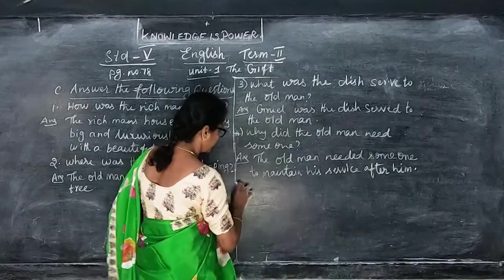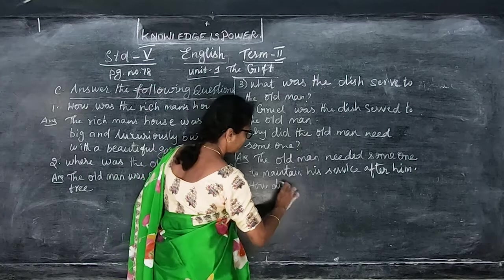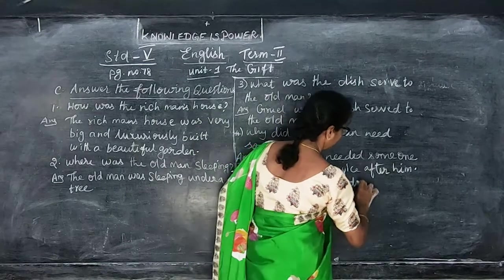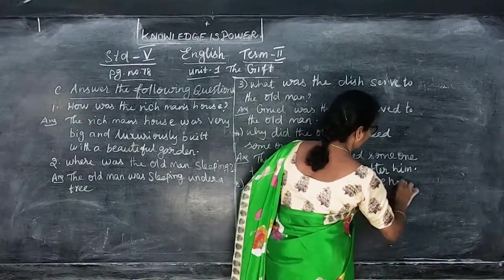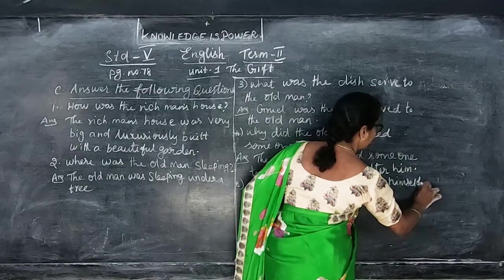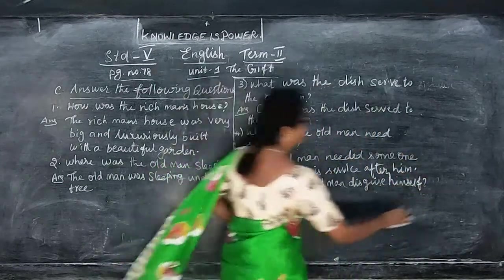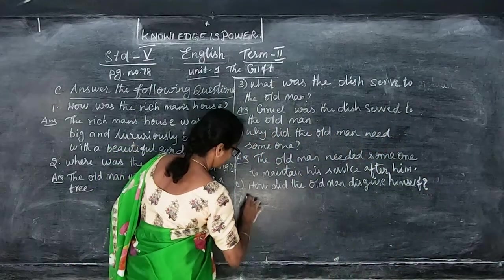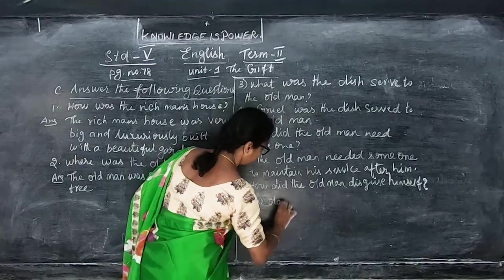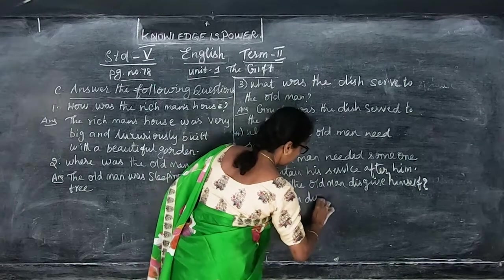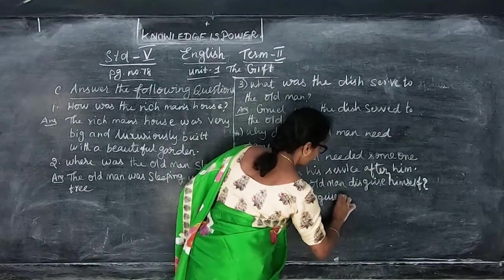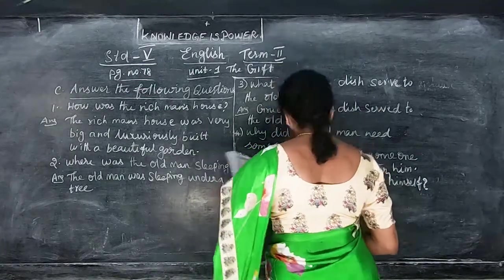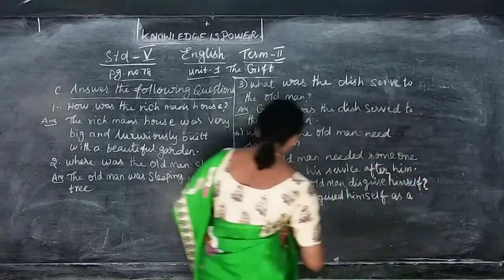How did the old man disguise himself? The old man disguised himself as a beggar.